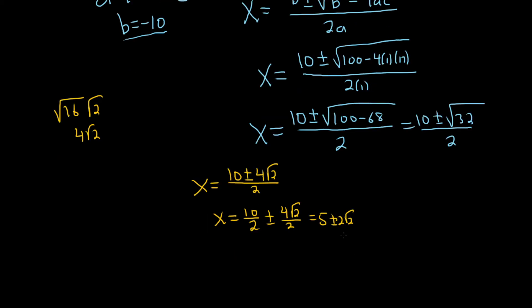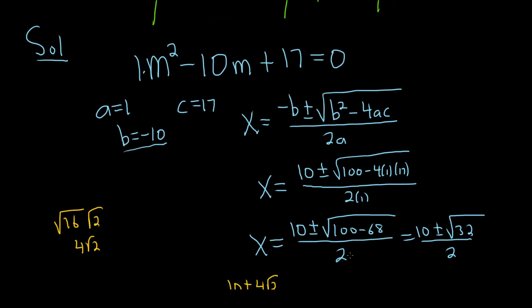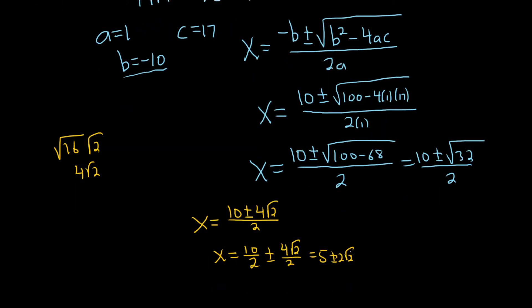So we have two values for x. Actually, it's not x, it's m in this problem. So m is equal to 5 plus or minus 2 square root of 2.